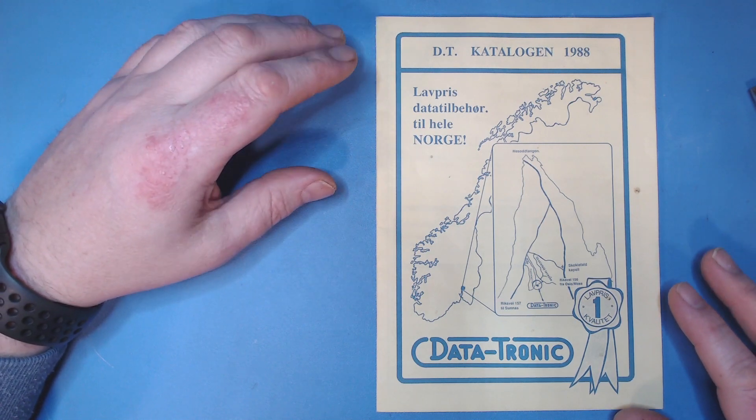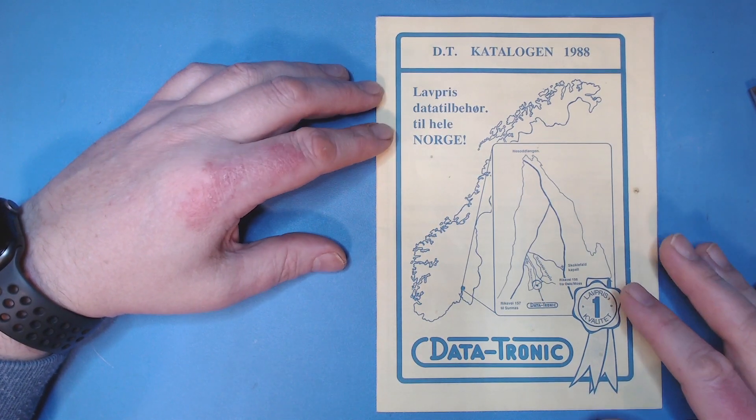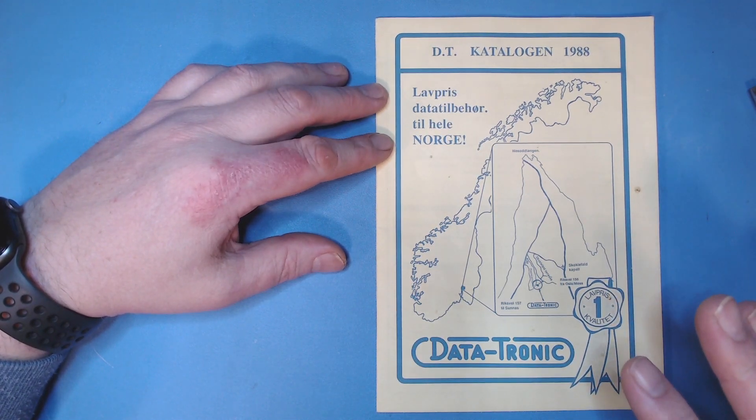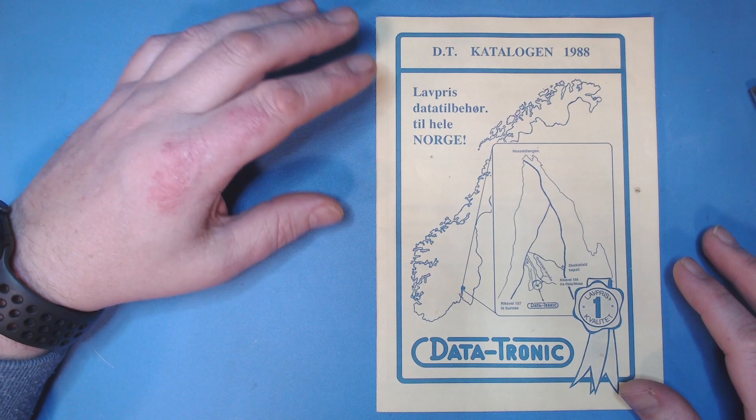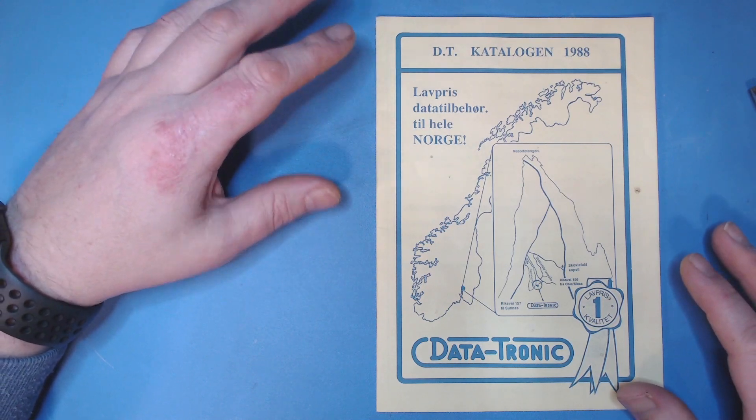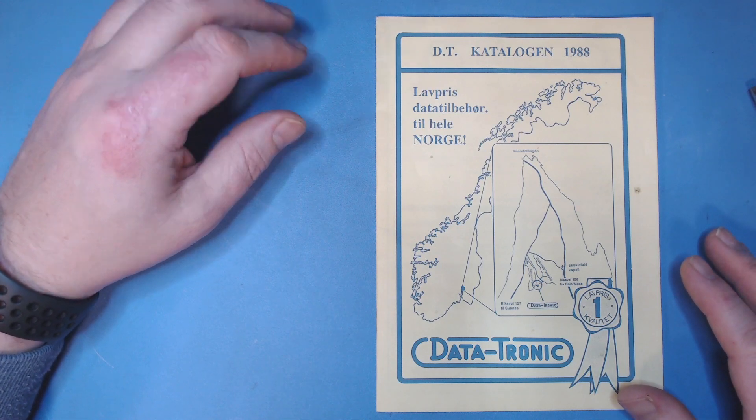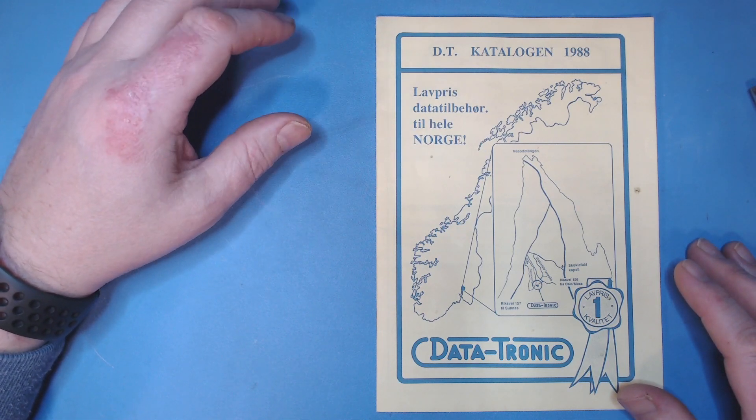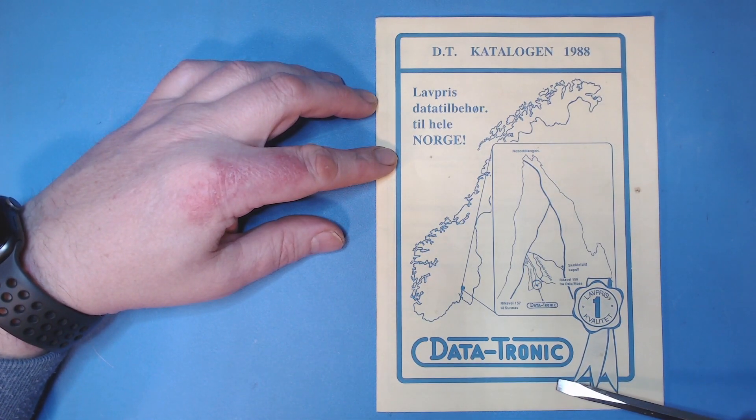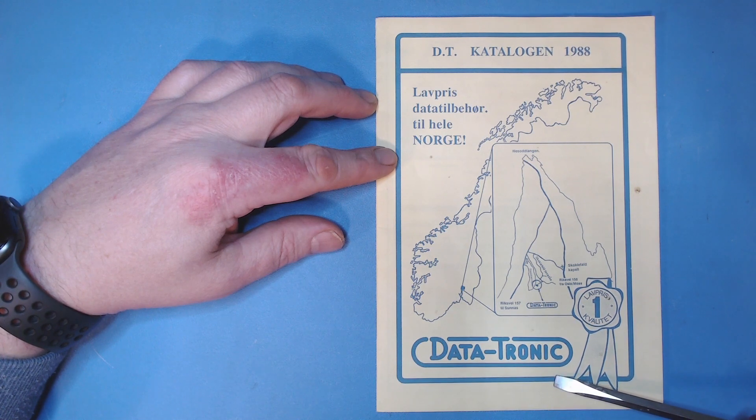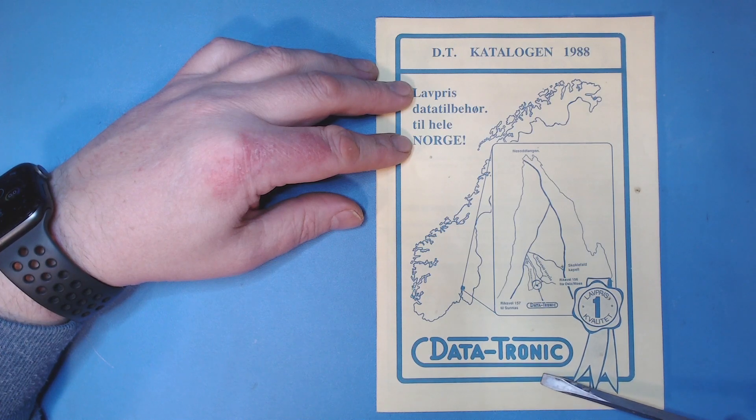You have to remember this was before the internet, before any kind of online ordering, and every country had their own preferred source of this type of equipment. But in the late 80s in Norway, it was this company, Data-Tronic, that was considered the number one source. Data-Tronic was both the importer and seller of much of this equipment.